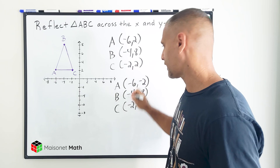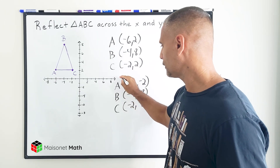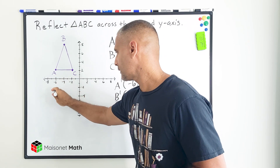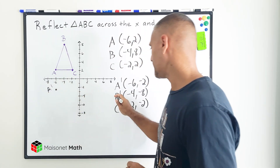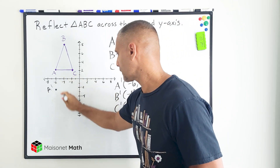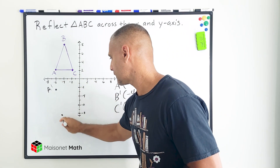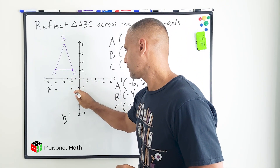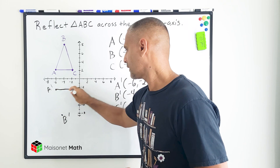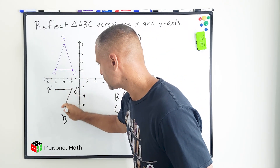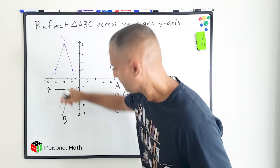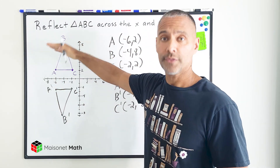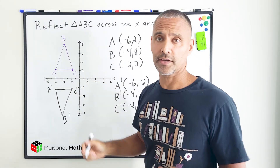So let's go ahead and plot our new points. The new location of A is going to be at negative 6, negative 2. B is now located at negative 4, negative 8. And point C is now located at negative 2, negative 2. So let's connect our points so we can visually see our reflection. We can see that this triangle was reflected across the x-axis, or flipped across the x-axis.